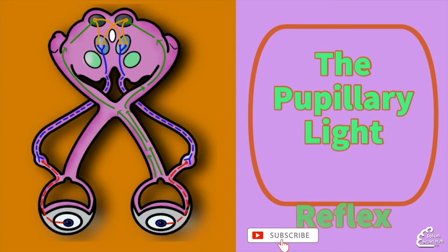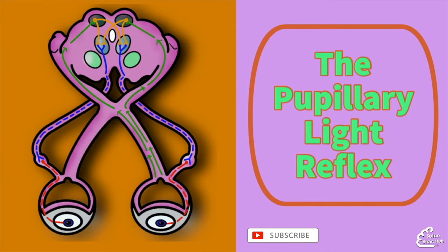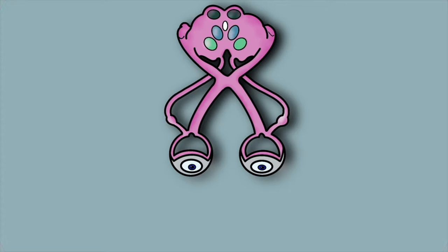Hello, I'm James and welcome to another Sutton Brain Hub video where we'll be covering the pupillary light reflex. The pupillary light reflex regulates the amount of light entering the eye by adjusting the diameter of the pupil according to the intensity of light. This allows the eye to see in a wide range of light levels.